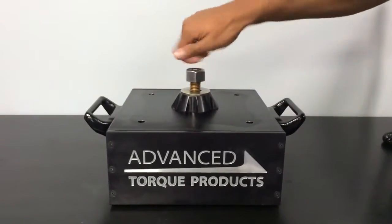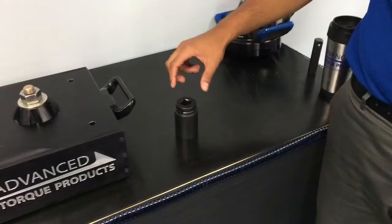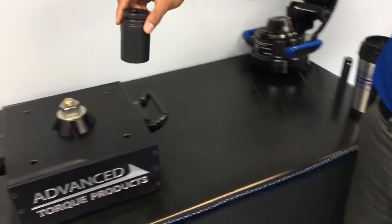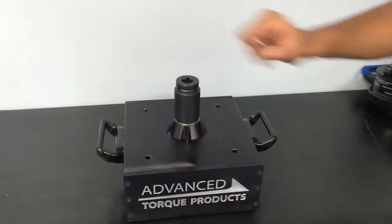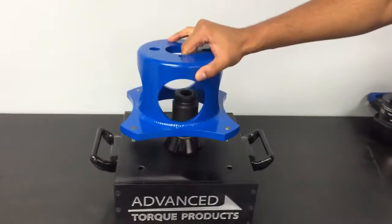To set up this application, start by hand tightening the nut, then place the socket onto the nut. Fix the reaction stand onto the application.